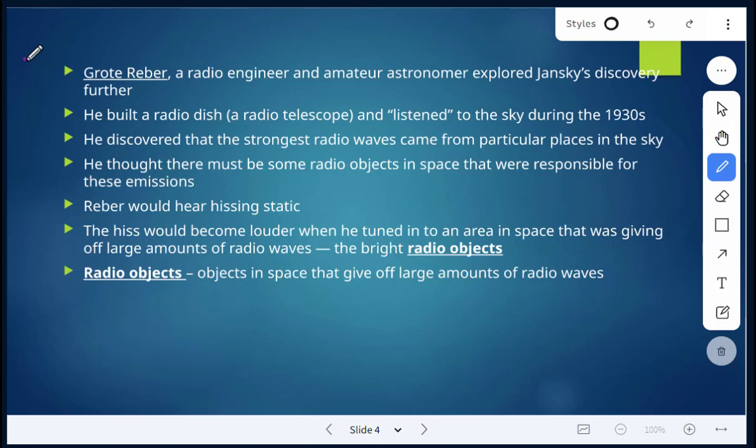Next we have Groot Reber. He was a radio engineer and also an amateur astronomer, and he explored Jansky's discovery further. So he built a radio dish, also known as a radio telescope, and he listened to the sky during the 1930s.